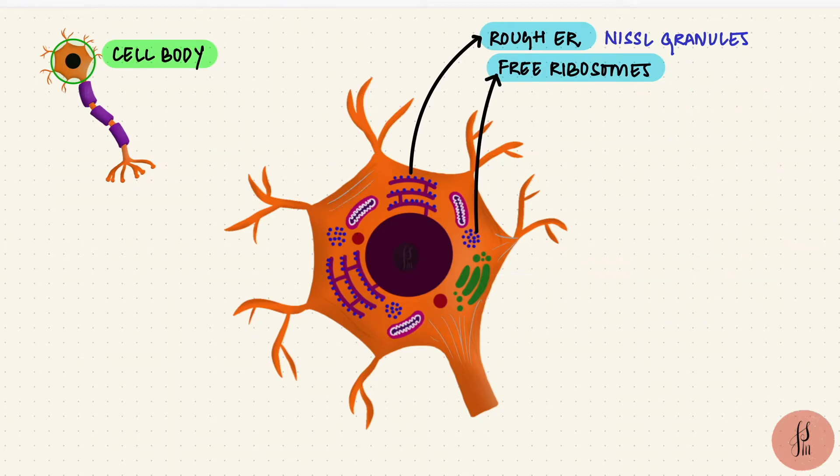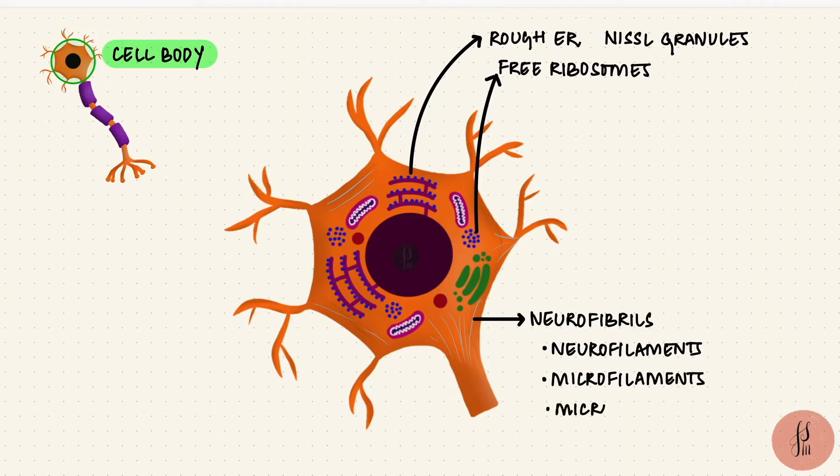The neuron also has neurofibrils. These are cytoskeletal structures which include neurofilaments, microfilaments, and microtubules. So Nissl granules, neurofibrils, these are special features.